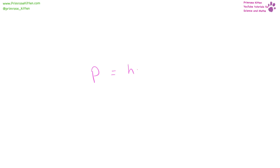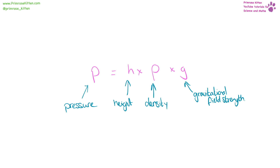Pressure (P) equals height times density (ρ) times gravitational field strength. Pressure is measured in pascals, height is measured in meters, density is measured in kilograms per meters cubed, and gravitational field strength is 10 newtons per kilogram.